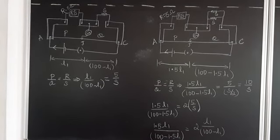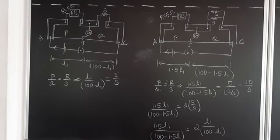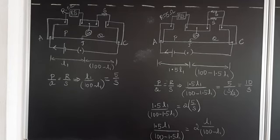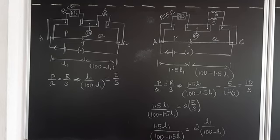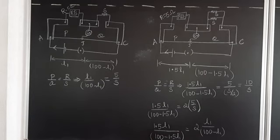Now the problem: the resistances in the two gaps of the meter bridge are 5 ohm and S respectively. When the resistance S is shunted with an equal resistance, the new balance length is found to be 1.5 L1, where L1 is the initial balancing length. Calculate the value of S.